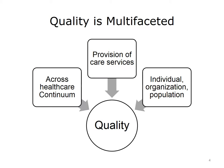Both definitions cover the overarching spectrum of quality in health care, providing optimal care to all patients that achieves the expected outcomes. These definitions encompass quality as a multi-faceted outcome that occurs across the health care continuum, and where provision of care services is key. Quality can be measured at the individual, organization, and population level.